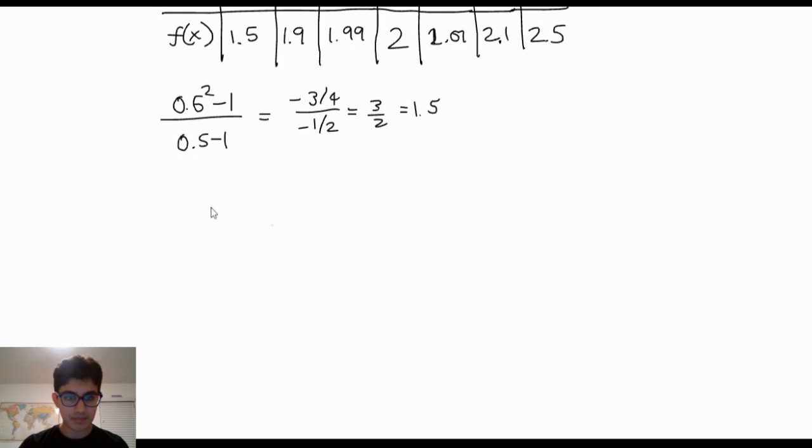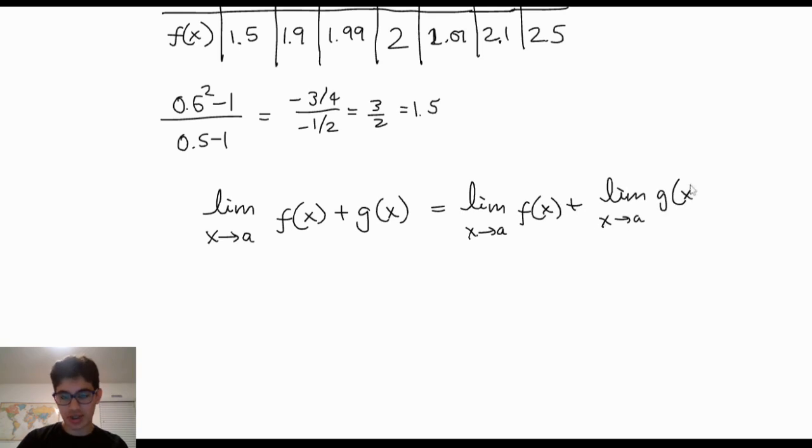So the limit as x approaches a of f of x plus g of x is equal to the limit as x approaches a of f of x plus the limit as x approaches a of g of x. And obviously, since it's equal, you can go from here to here, or you can go from here to here. So it's interchangeable. And actually, I should make this plus minus because it's the same both ways. This is one important property.